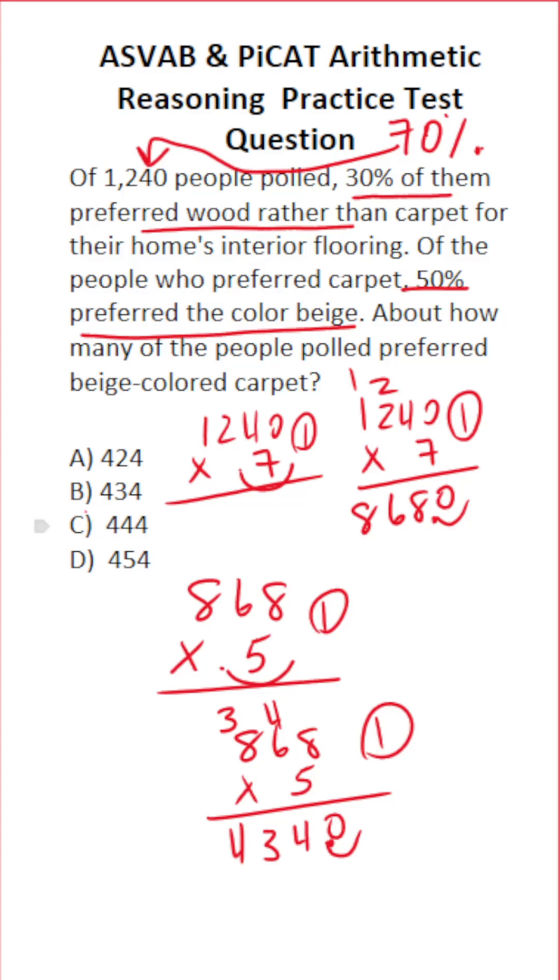So you can see that 434 people, answer choice B, preferred beige color carpet.